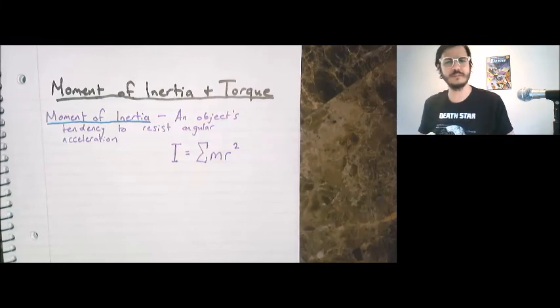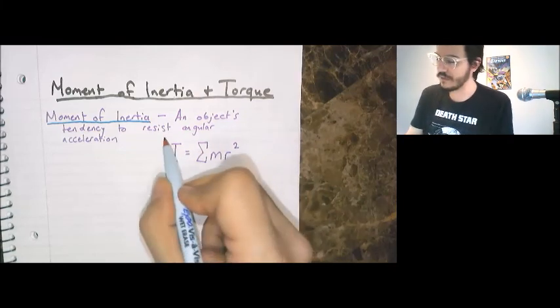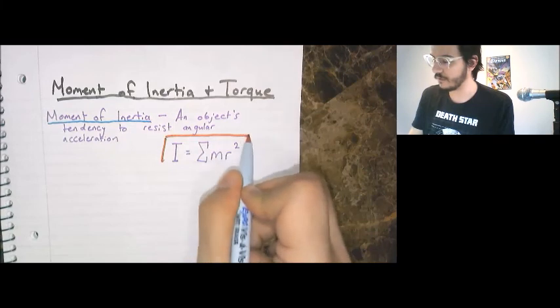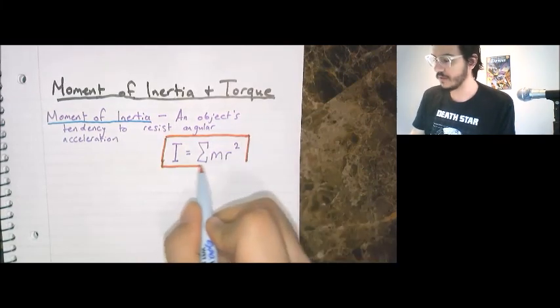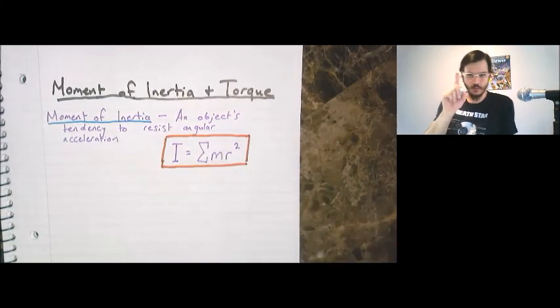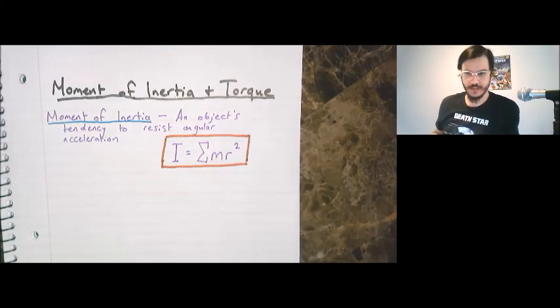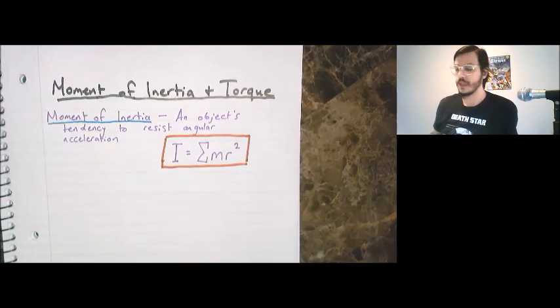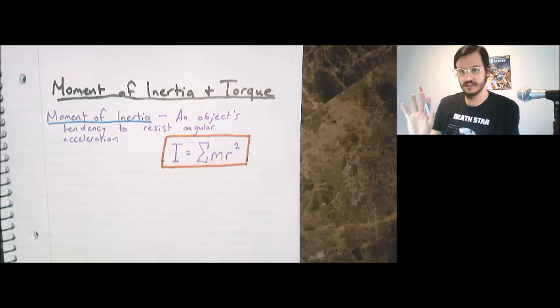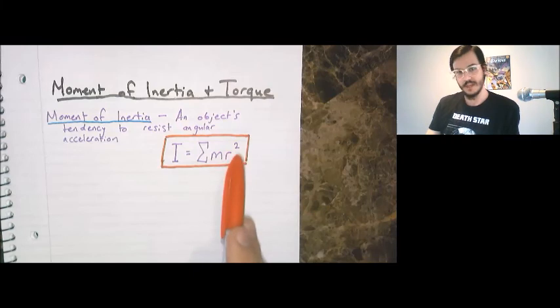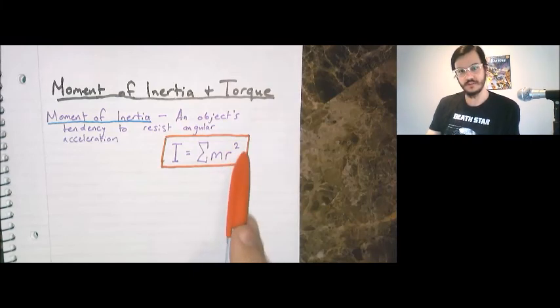Moment of inertia is an object's tendency to resist angular acceleration, similar to how regular mass or inertia is your ability to resist translational acceleration. In order to determine an object's moment of inertia, we can use this formula. Moment of inertia I, I know what you're thinking, we've already used that for current. Well, that's in a different unit, so we get to reuse it. The sum of mass times distance from the axis of rotation squared.